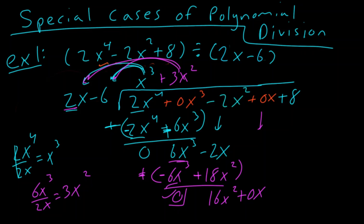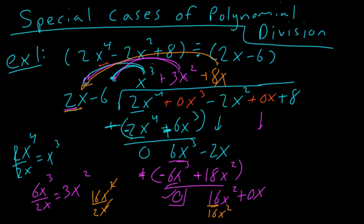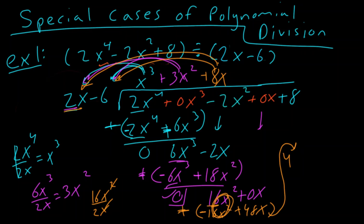We now have 16x squared divided by 2x. 16 divided by 2 is 8, and x squared divided by x is just x, so we get plus 8x. When I distribute this back through: 8x times 2x is 16x squared, and 8x times negative 6 is negative 48x. I subtract that away. 16x squared minus 16x squared is a 0 pair. And 0x plus 48x is 48x. So I write 48x. And lastly, we drop down that plus 8.